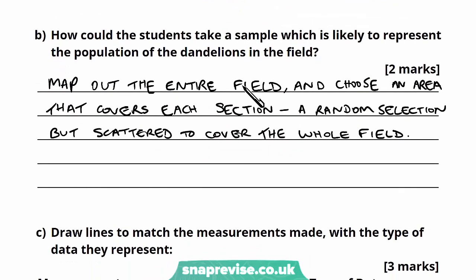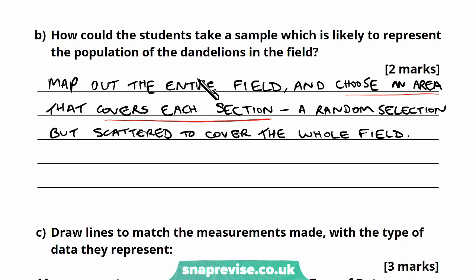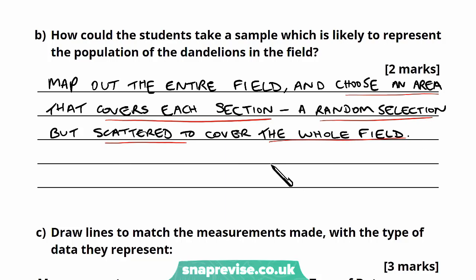They should map out the entire field — on paper or a digital map — and choose areas covering each section. Another way to put it: take dandelions from all different parts of the field, not just one area. It should be a random selection — don't go for the ones that stand out as taller or bigger. Map all dandelions and choose ones at random to ensure they're scattered across the area, selecting based on presence rather than the features of the dandelion itself.